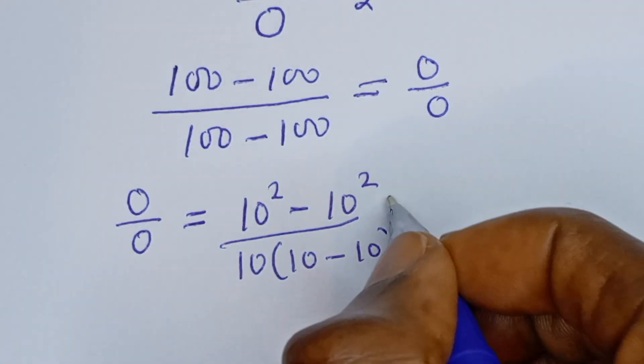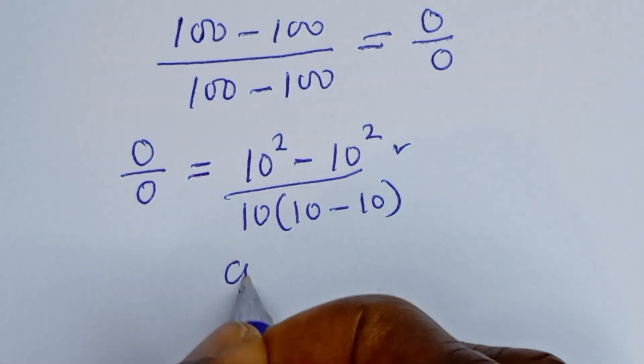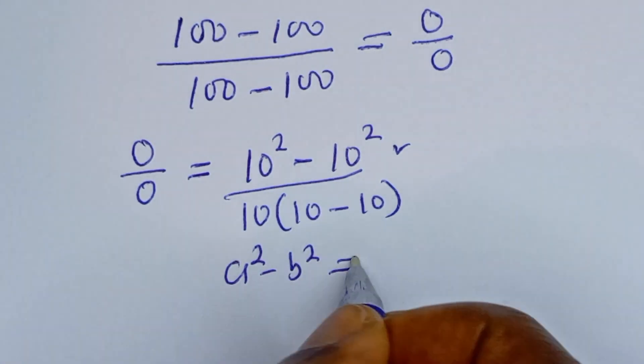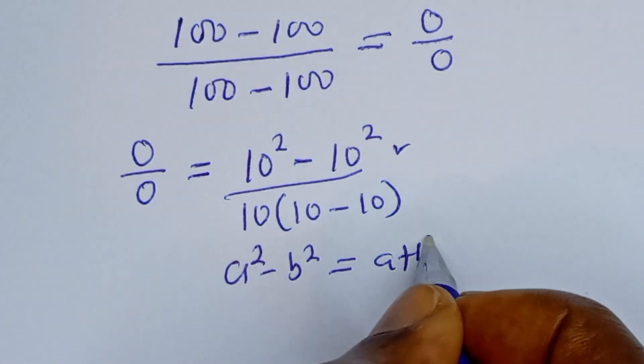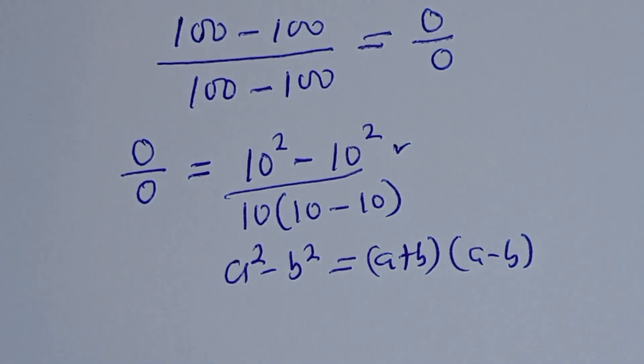If you look at the numerator here, this is in the form of perfect square, that is, if you have a square minus b square, this is equal to a plus b bracket a minus b.